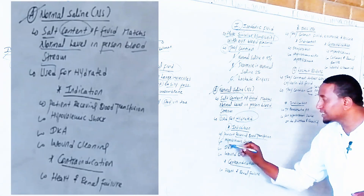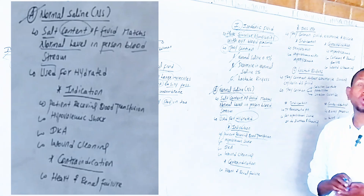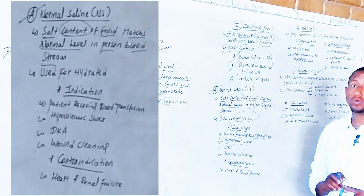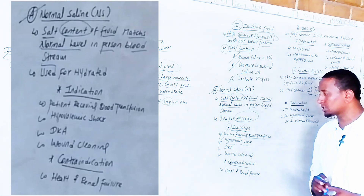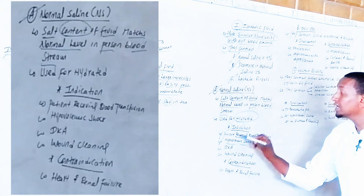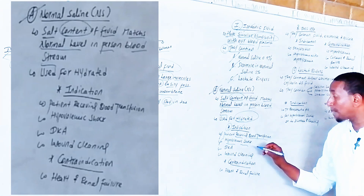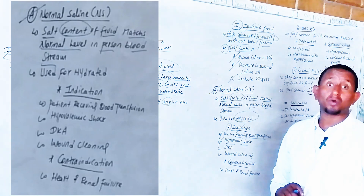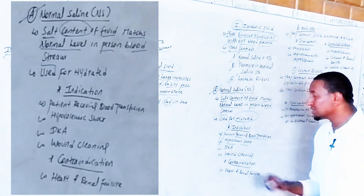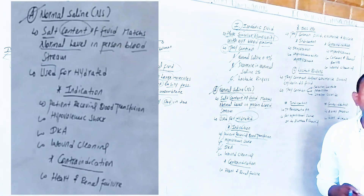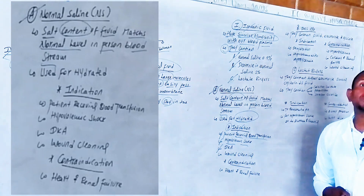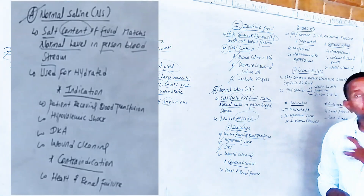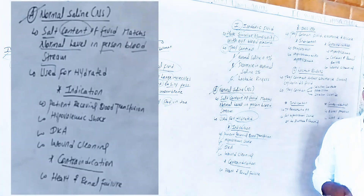Normal saline is also indicated when the patient is in hypovolemic shock. Hypovolemia means decreased blood volume. Normal saline is used in hypovolemic shock secondary to blood loss or hemorrhage. The third indication is diabetic ketoacidosis (DKA) — the most important fluid given when a patient develops DKA is normal saline.